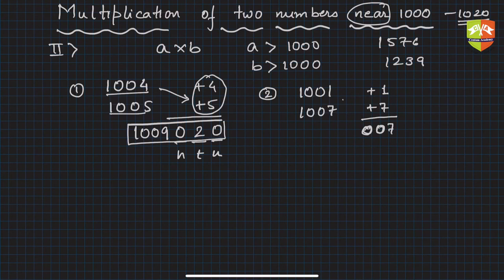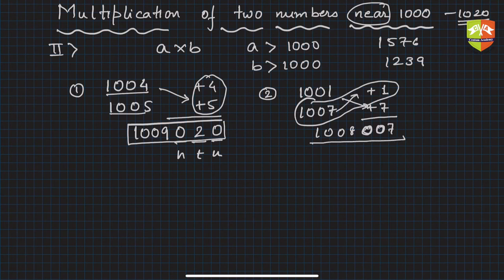This is done, and then simply this or this. So it is 1008. So 1007 plus 1 is 1008, and you simply write like this. So this is the product. Clear?